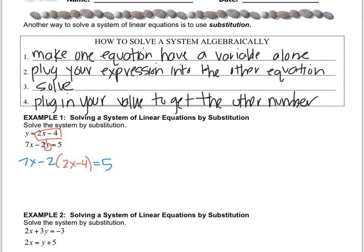Now I go to step number 3, which says solve. This is straight back from 7th grade. We distribute the two. So you have 7x minus 4x plus 8 equals 5. Now combine like terms. You get 3x plus 8 equals 5. That is 3x equals negative 3, which means that the x value is negative 1.